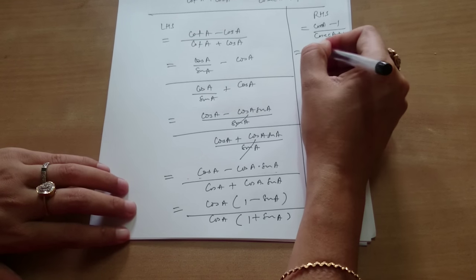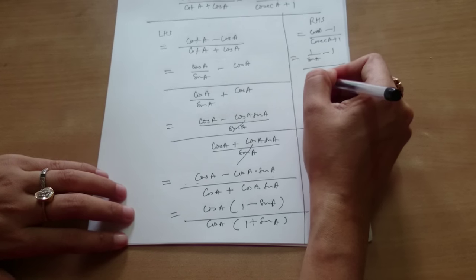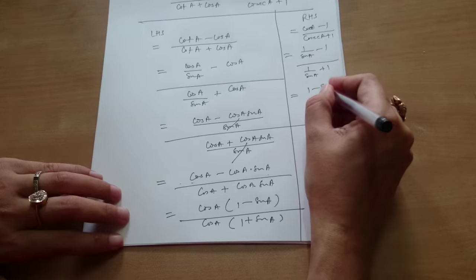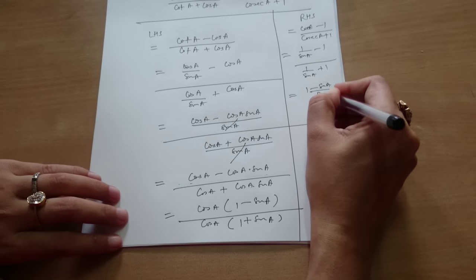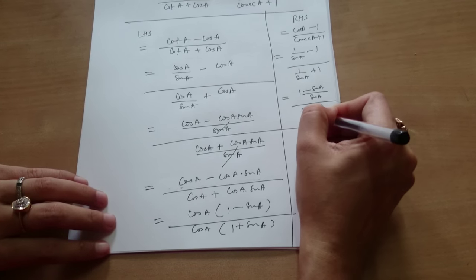1 upon sine A minus 1 upon 1 upon sine A plus 1. Again take the LCM. This is 1 minus sine A upon sine A divided by 1 plus sine A upon sine A.